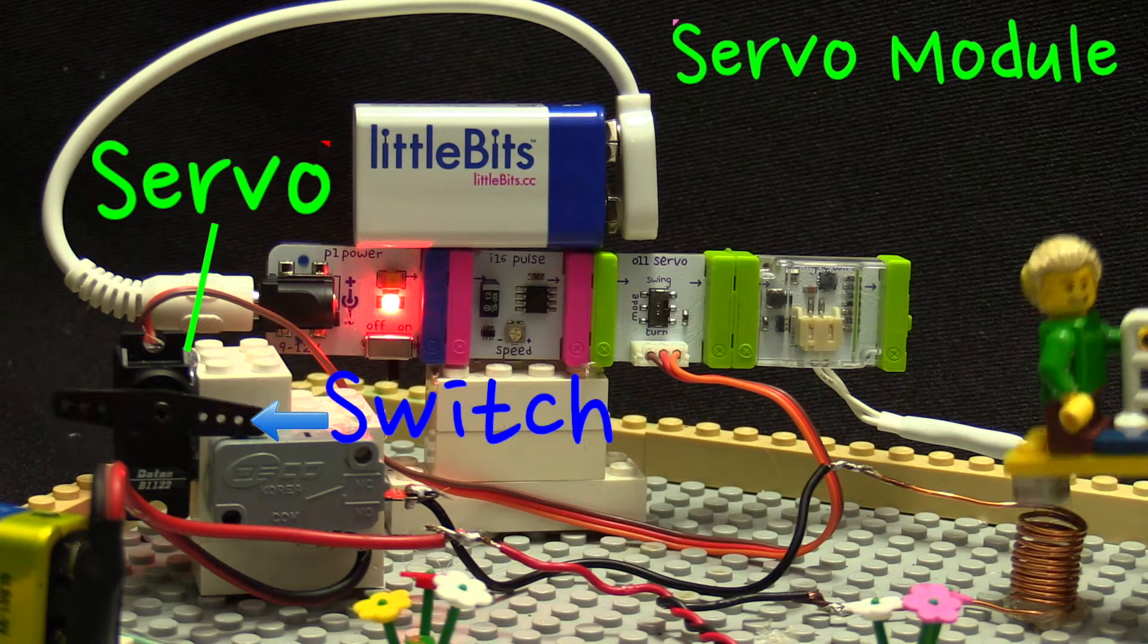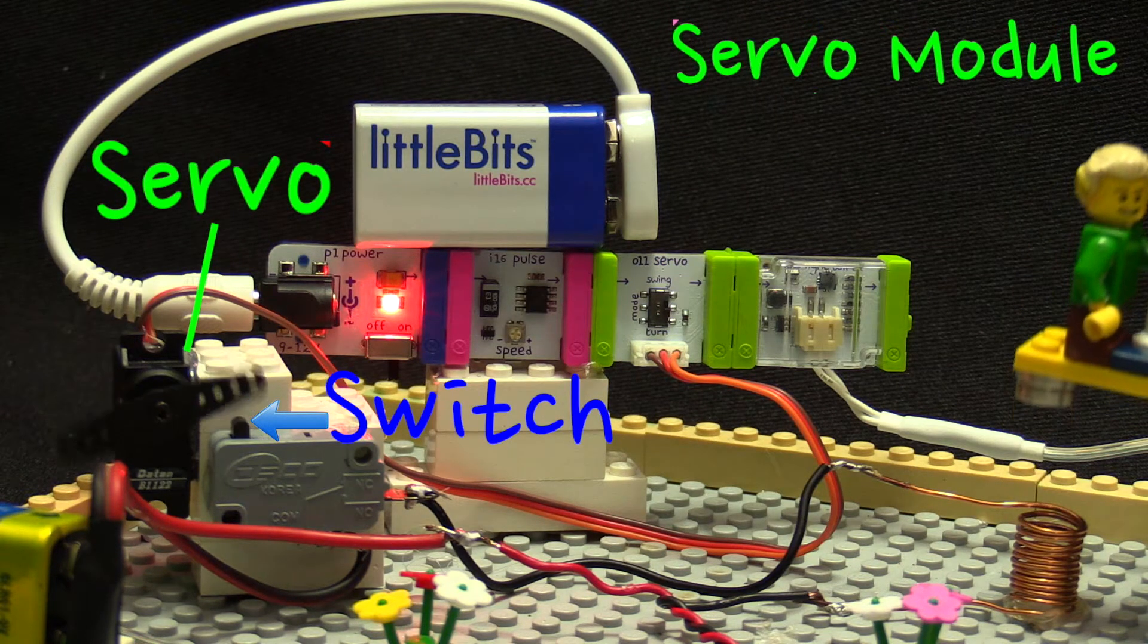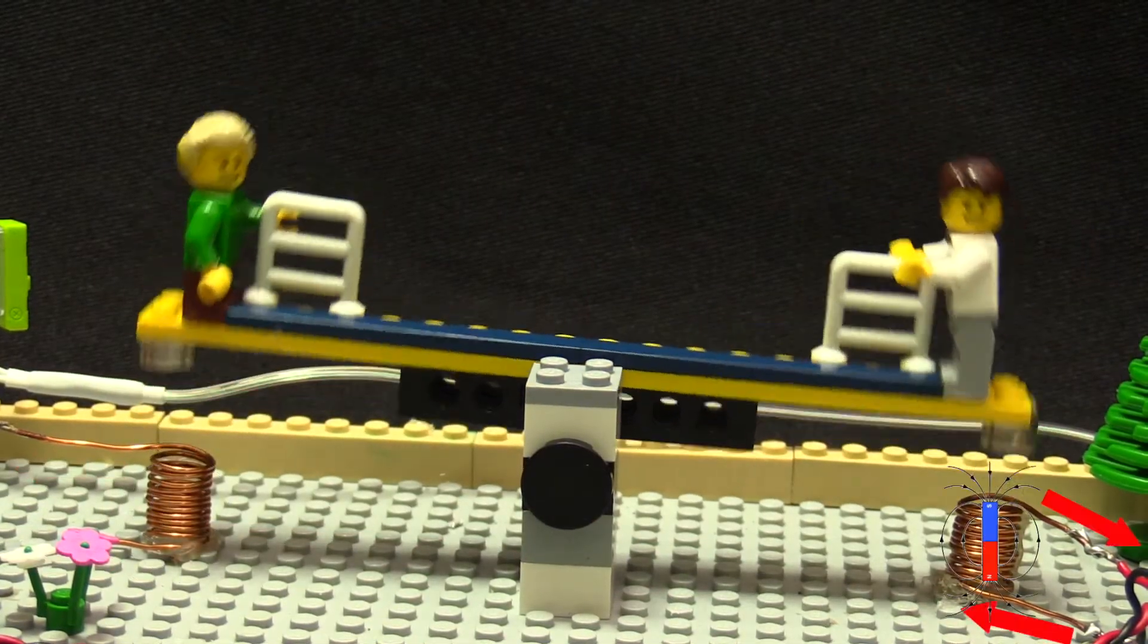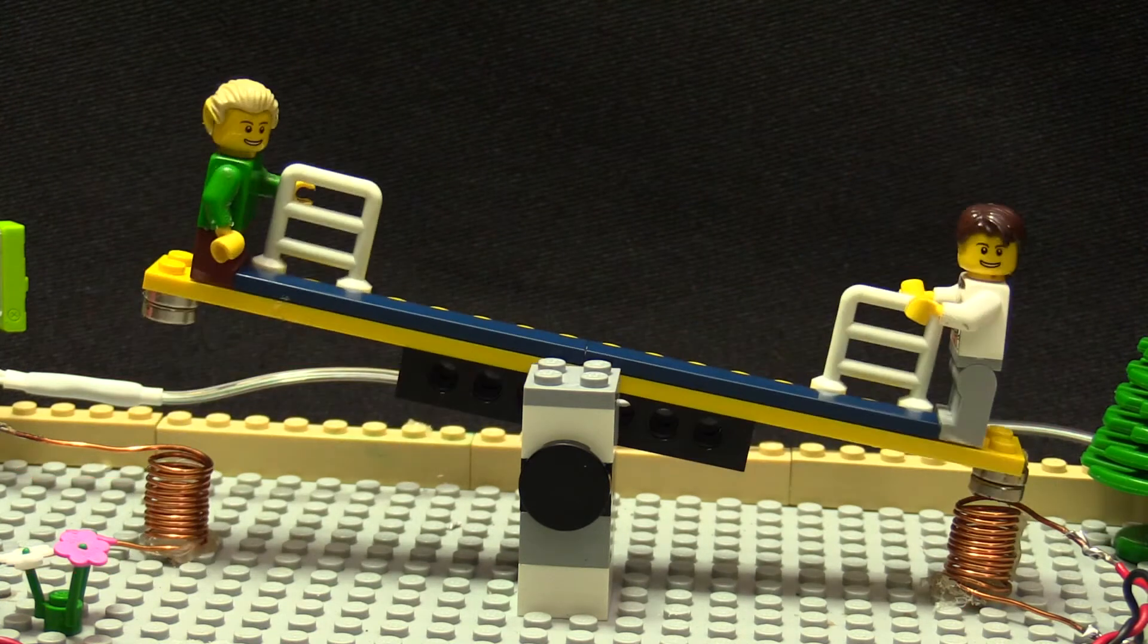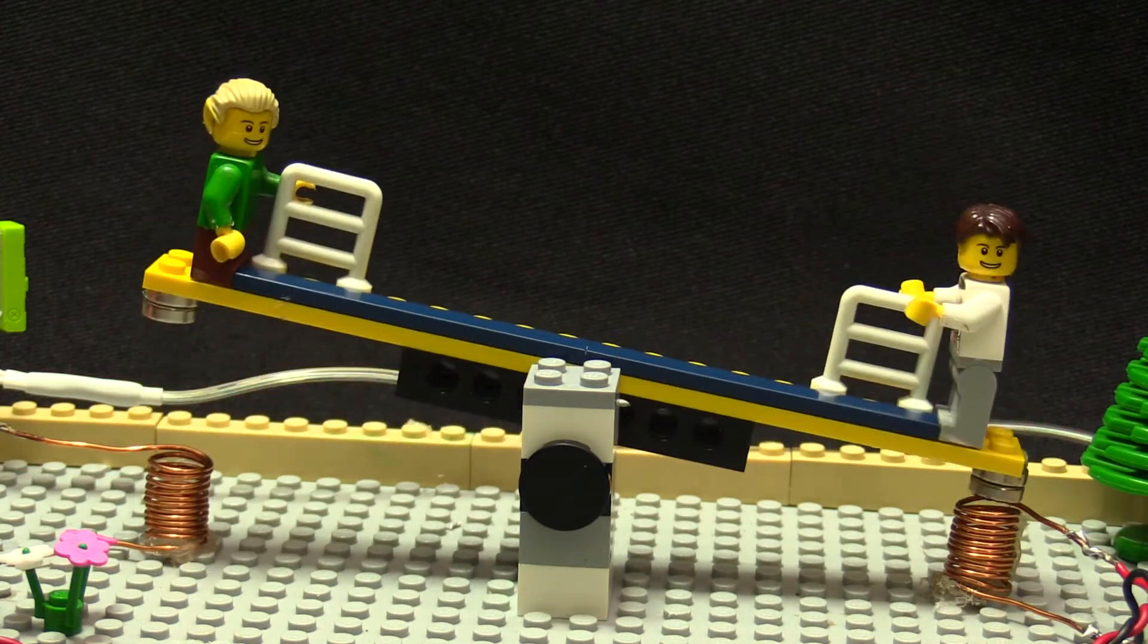When it goes down, the servo pushes down on the switch which then controls an external circuit which sends some current through the electromagnet which repels the magnet that's stuck to the base of the seesaw.